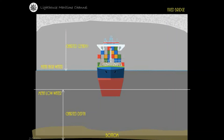Charted clearance is measured from the Mean High Water to the underside of the bridge structure. Tidal Range is the difference between the Mean High Water and Mean Low Water.